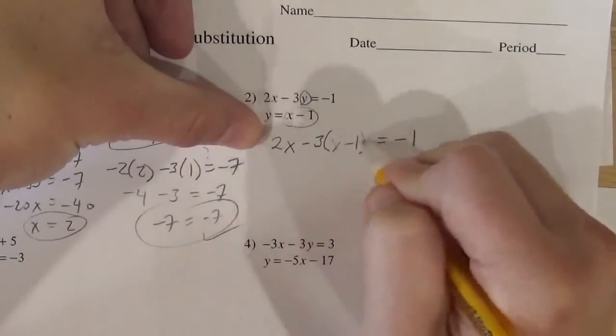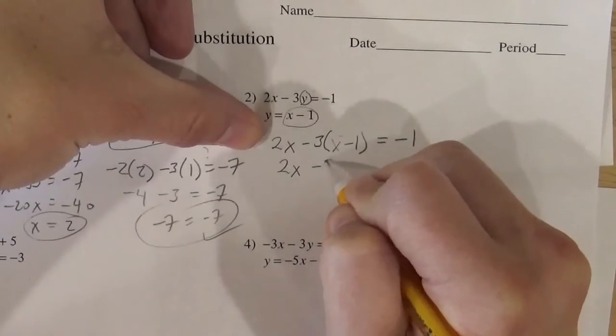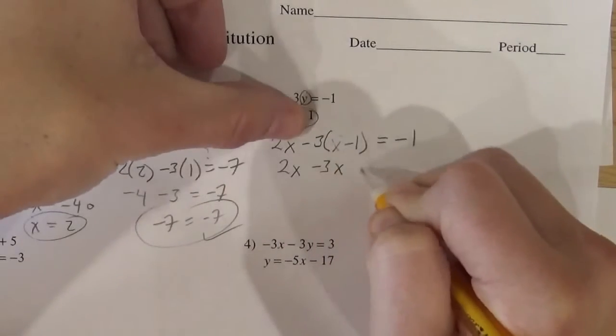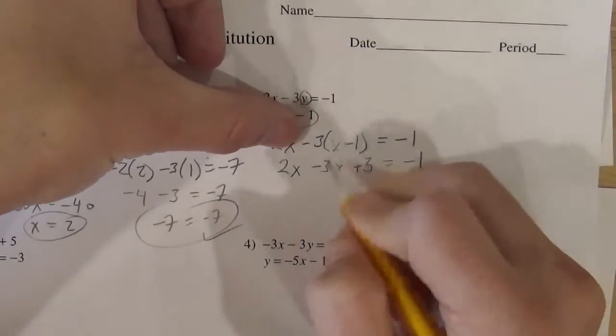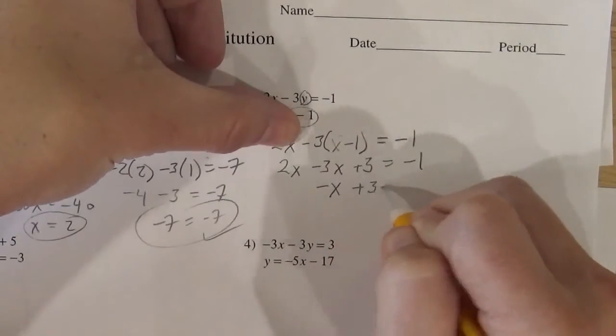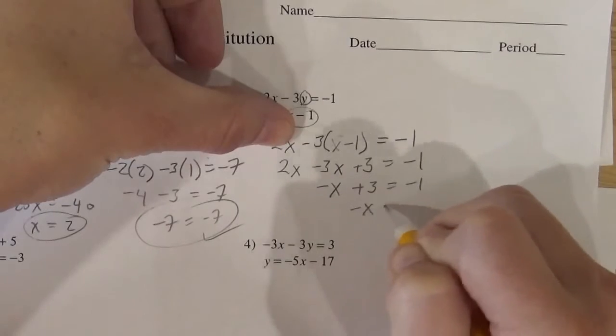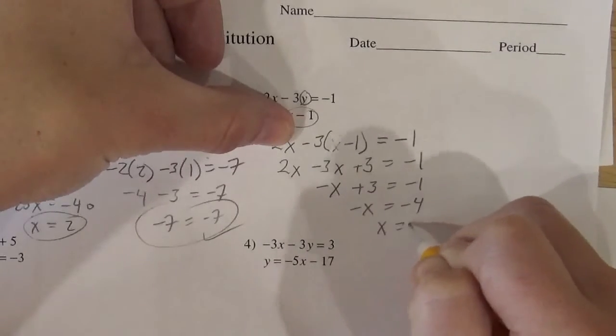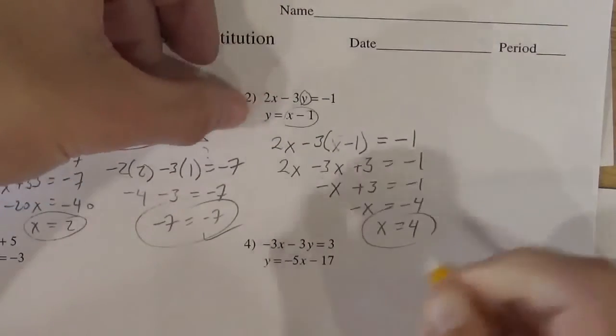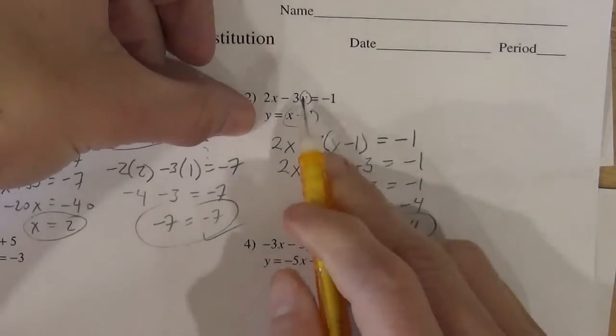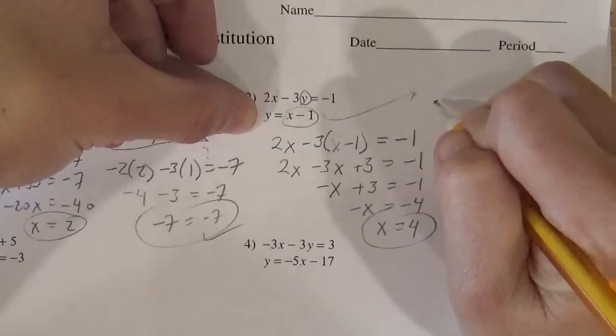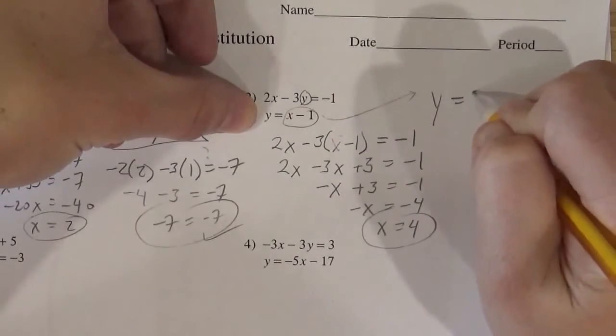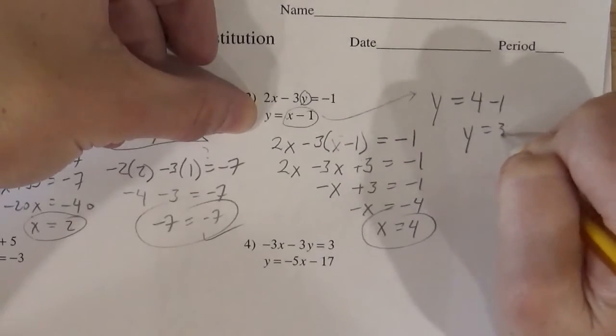So distribute that negative 3. So it'll be 2x minus 3x plus 3. Make sure you distribute that negative. Equals negative 1. So negative x plus 3 is negative 1. So negative x is negative 4. So x is 4. Got one. So now plug that one in to either one of those equations. This one's quite nice though, because it's solved for y. So y equals 4 minus 1. So y equals 3.